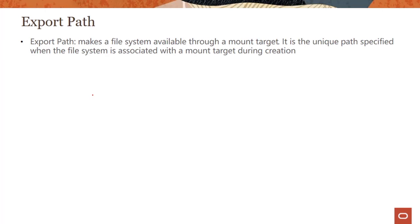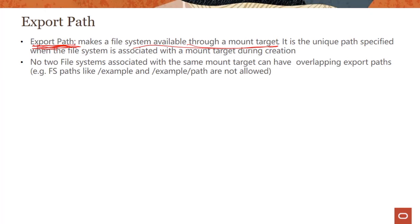How is a file system made available? A file system is made available through a mount target using a concept called export path. The export path is the unique path specified when the file system is associated with a mount target during the creation process. One important rule: no two file systems associated with the same mount target can have overlapping export paths. For example, a path like /example and a path like /example/path are not allowed because the prefix overlaps and the system cannot distinguish the two file systems.